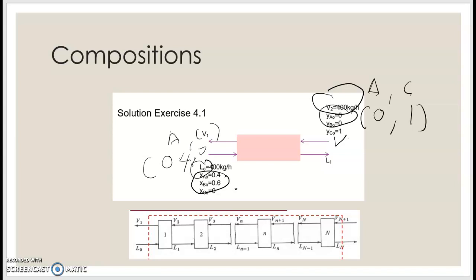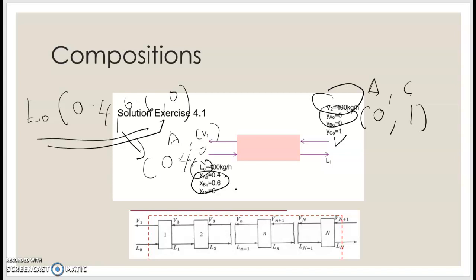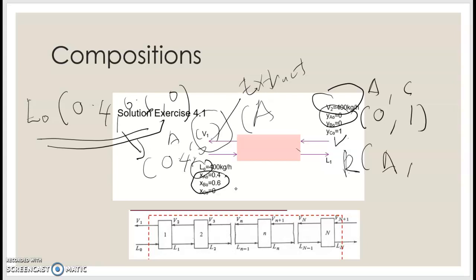For liquid-liquid extraction, we always represent composition in terms of A, B, and C. So L-naught can be simplified as 0.4, 0.6, and 0. You need to include all this information. We also have exit streams: V1 is the extract stream coming from the solvent side — meaning A is high there. For your raffinate L1, A is lower compared to your extract. This is the single-stage liquid-liquid extraction.